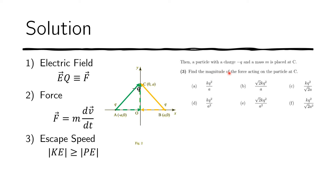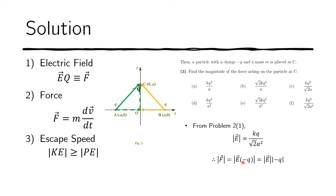Now let's find the magnitude of the force acting on particle C. The force is just the electric field times the charge q. The charge in the problem is negative q. The electric field from the first problem in this section is kq over the square root of 2 times a squared. Multiplying that by negative q and taking the absolute value gives us our expression. Simplifying, the absolute value of negative q is just q, so the correct answer is kq² over (√2 · a²).